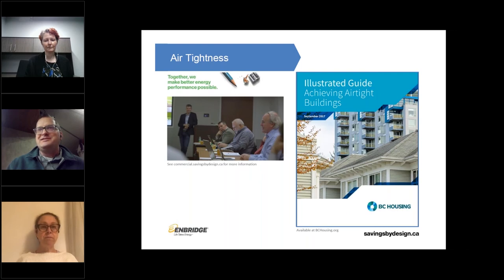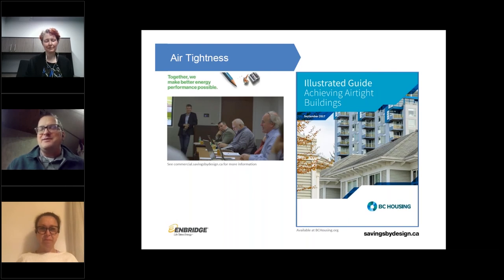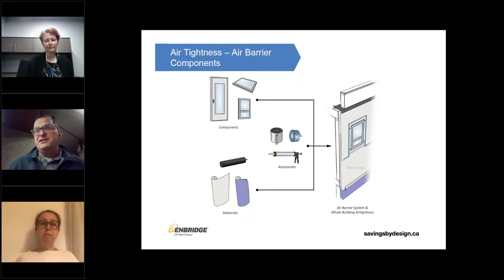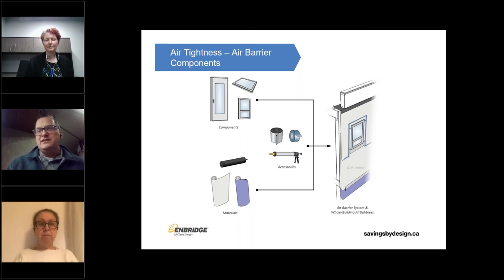We often discuss air barriers at our SBC workshops. There are more and more documents coming out — this one from BC Housing tries to share knowledge and insights on achieving air tightness in buildings. The basics include how to build up your air barrier, what materials are the components, and implications of different materials are very project specific. There's not one magic way to achieve an airtight building — there's a vast variety of different materials being used, but that obviously needs to be thought through. The detailing is the trick.